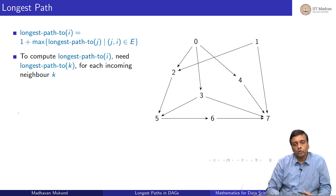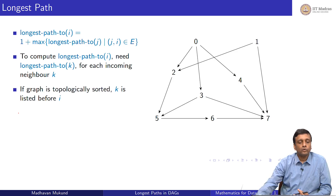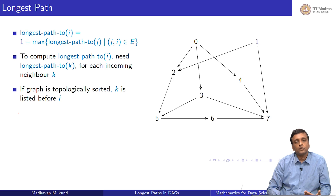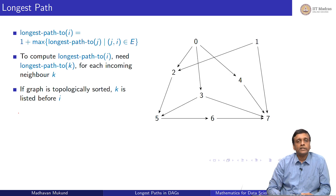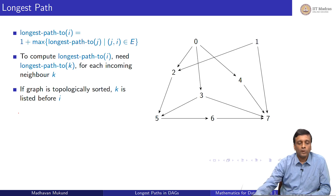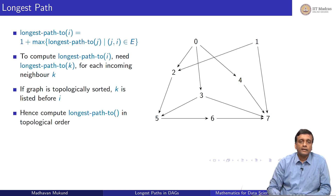To compute the longest path to i, I need the longest path values for all its incoming neighbors. I know those if I have already calculated them before reaching i, which I will have if I calculate them following the topological sort order. If I sort the vertices according to dependencies, then by the time I come to i, all its incoming neighbors have already been listed before it. So the strategy is to compute longest paths in topological order.